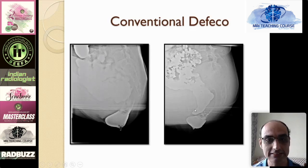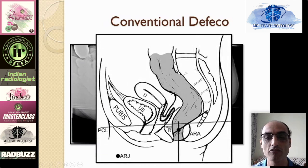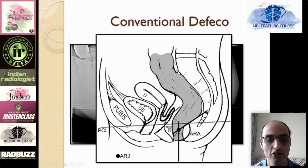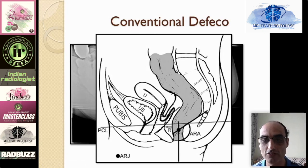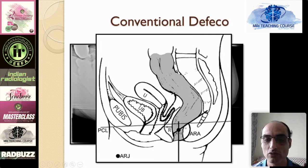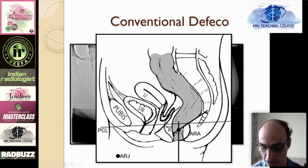It is prudent at this stage to look at the basic anatomy of the pelvic floor. The pubococcygeal line — the PC line — joins the inferior margin of the pubic symphysis to the last coccygeal articulation. All pelvic organ prolapses and descents are measured as perpendicular tangent distances below this PC line. The other key measurement is the anorectal angle, which is the angle formed by the posterior wall of the rectum and the long axis of the anal canal.